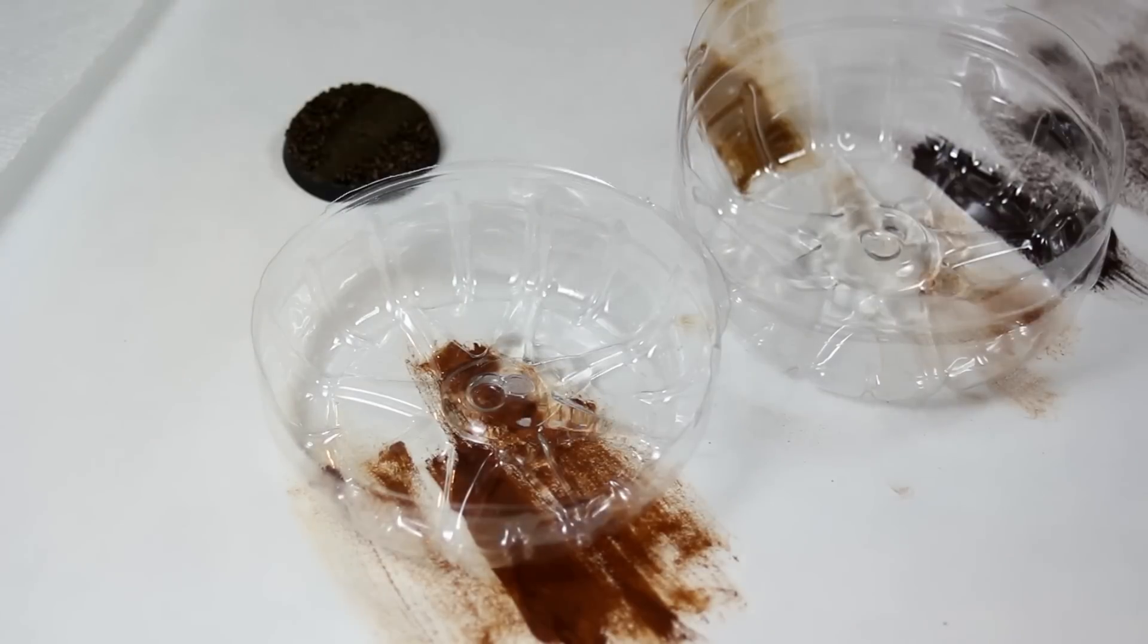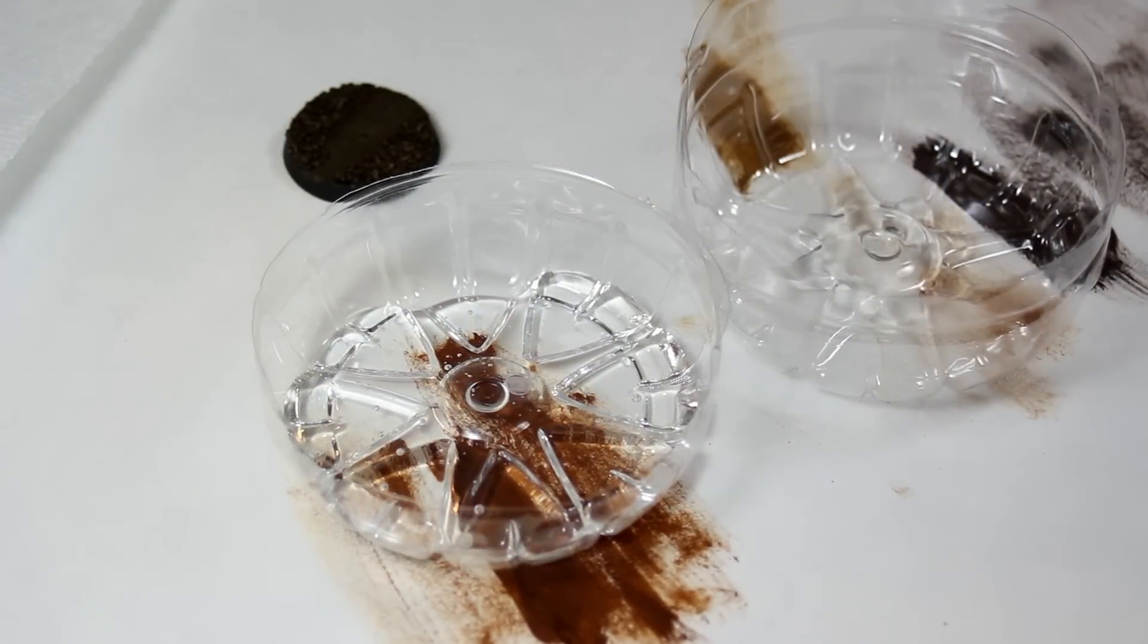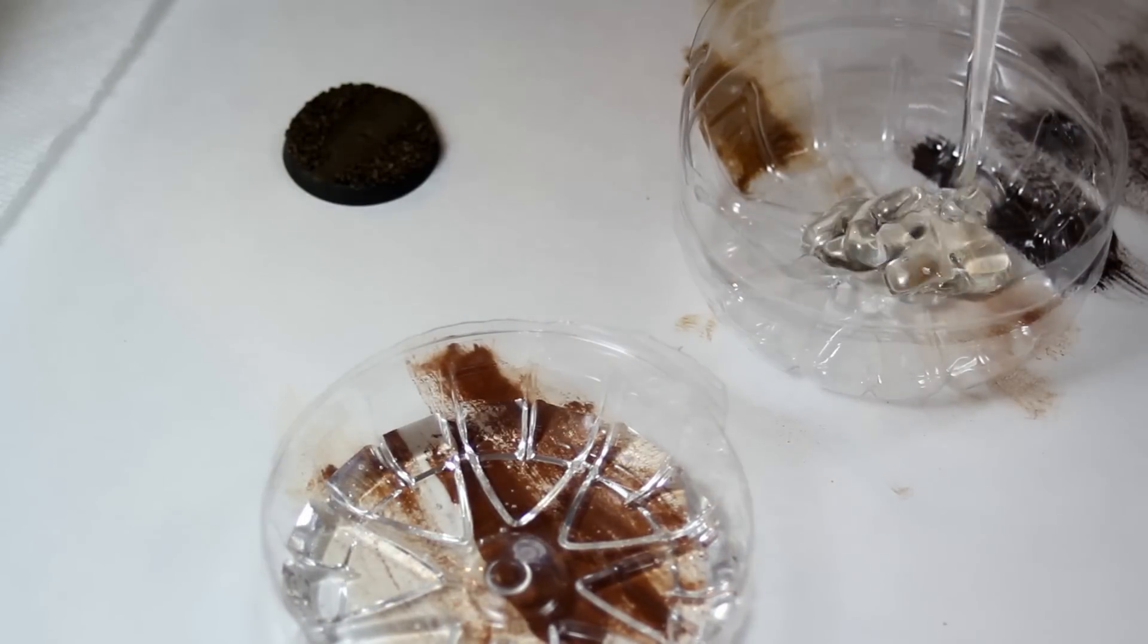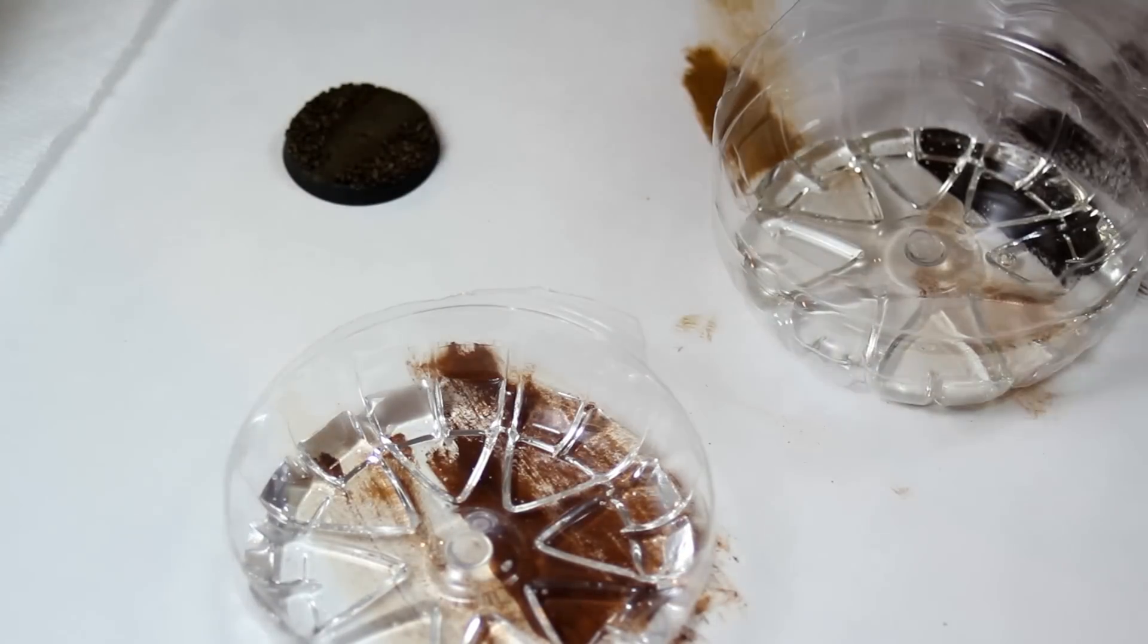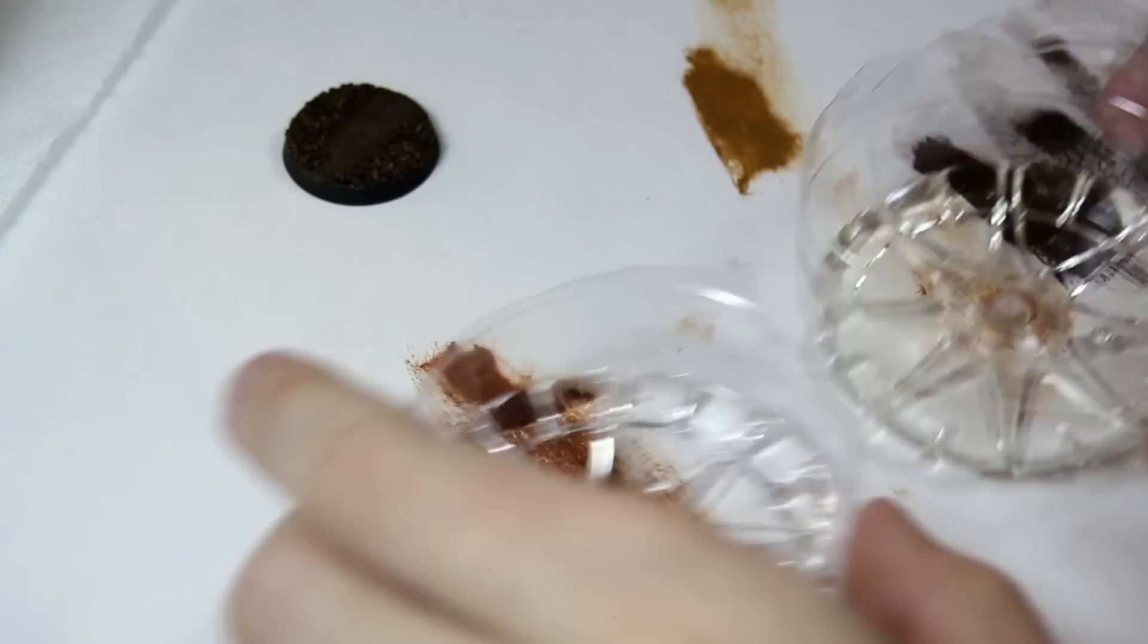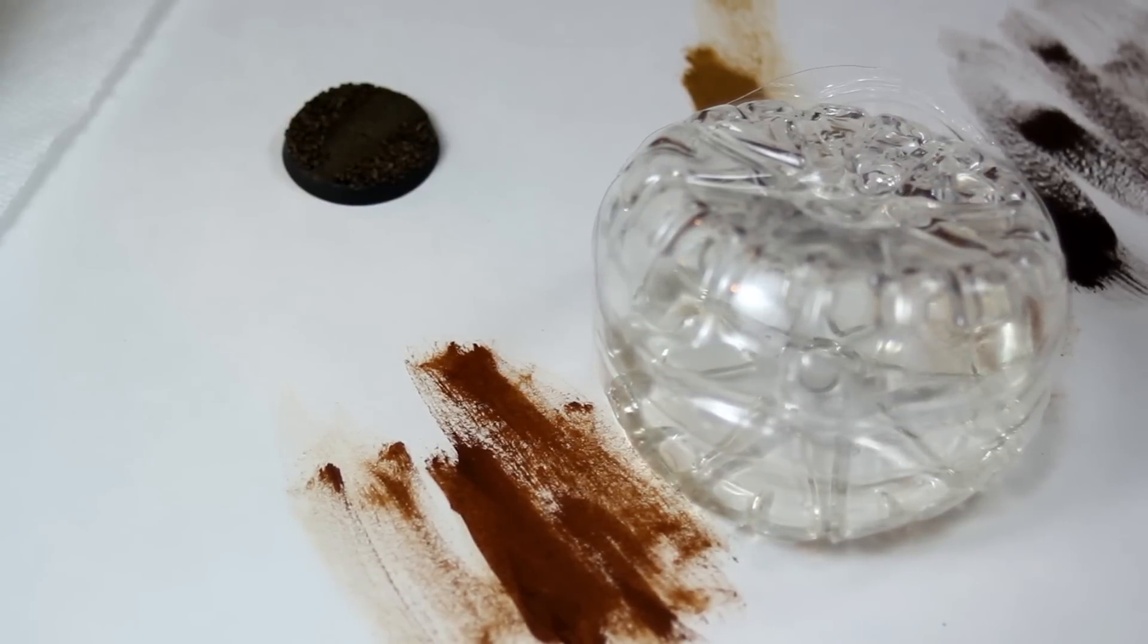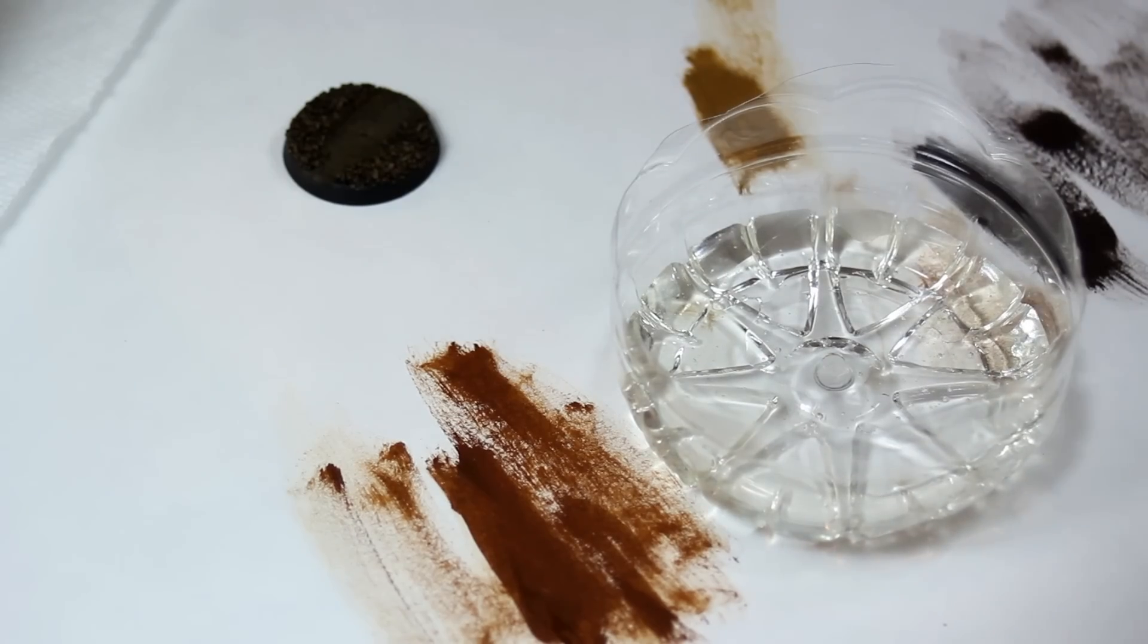And then I am mixing up some Envirotex Light. And this is going to create that water effect. And I found mine at Menards. You can buy it online from Amazon and stuff like that. And basically it's a two part mixture. You just mix it together and then you can pour it on things and you can basically apply it to any surface. So it's great for bases. And you can create water bases too that have submerged stuff in it.